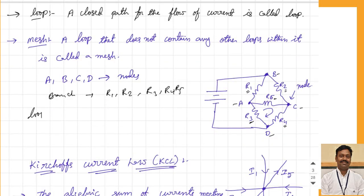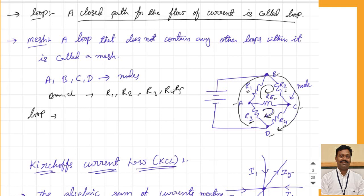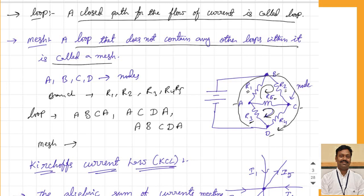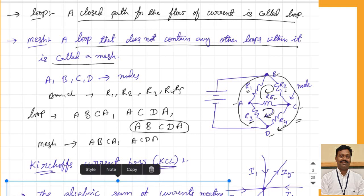A loop is defined as any closed path for the flow of current. In the example circuit, you can see several closed paths: loop A-B-C-A is one loop, loop A-C-D-A is another loop, and loop A-B-C-D-A is also a closed path — all these are called loops. A mesh is a loop that does not contain any other loop within it. The outer loop A-B-C-D-A contains two smaller loops inside it, so it is not a mesh. There are only two meshes: A-B-C-A and A-C-D-A.